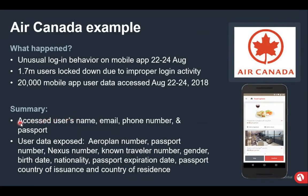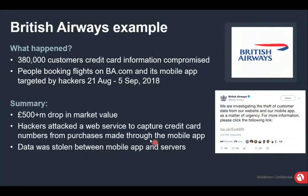Real-world examples: Air Canada on August 22–24, 2018 had 20,000 mobile users' data accessed — including usernames, email, phone numbers, and passport data, which was published. Similarly, British Airways had 380,000 customer credit card records compromised in September 2018, resulting in a loss of over £50 million for the company — stolen via malicious mobile apps with credit card numbers published and used.